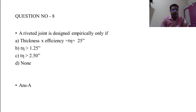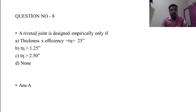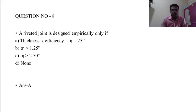Question 8: A riveted joint is designed empirically only if — A) t × η = 25, B) t × η > 1.25, C) t × η > 2.50, D) none of the above. The correct answer is A: thickness × efficiency = 25.